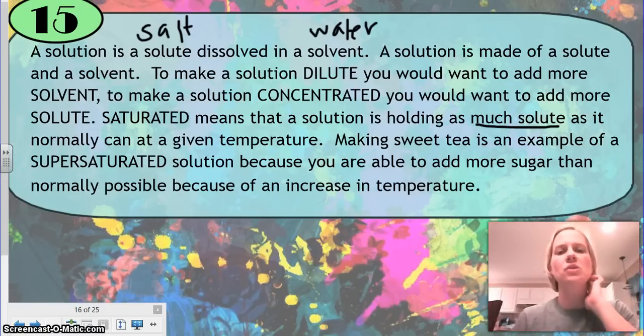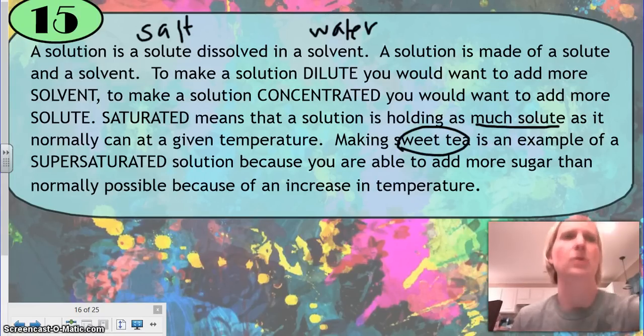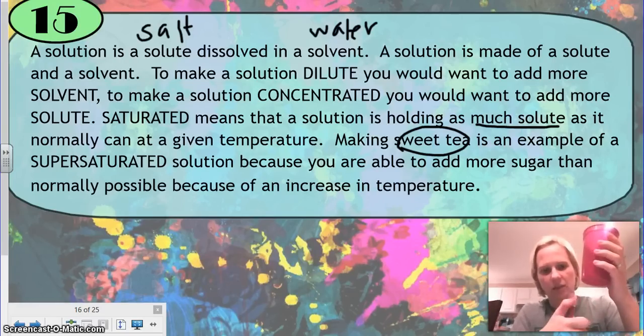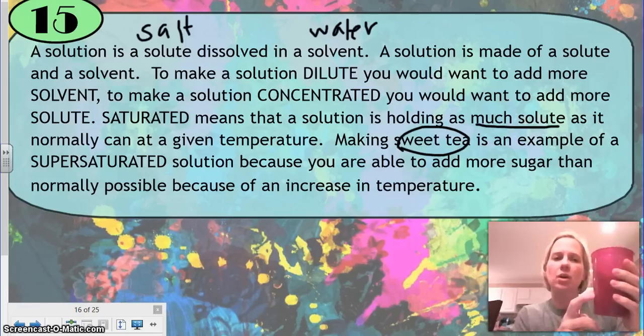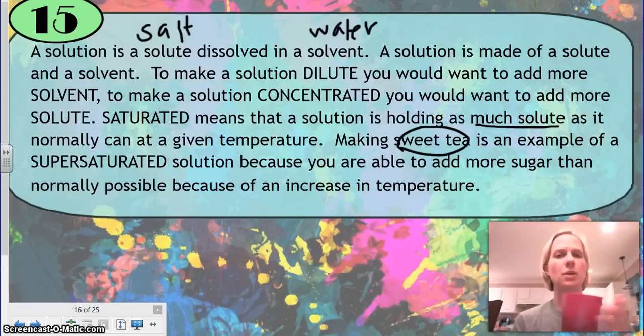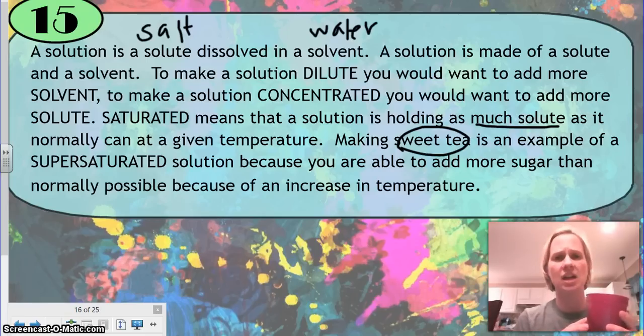To make something supersaturated, something like maybe sweet tea, we're going to have our solution, but I'm going to add fire to it. Once I heat this up, this solution can now take more solute. So for sweet tea, when I'm done brewing the tea, it's hot, that's when I'm going to add my sugar, because that's going to allow more sugar to dissolve. Once the tea cools down and gets cold, it's not going to take as much sugar.